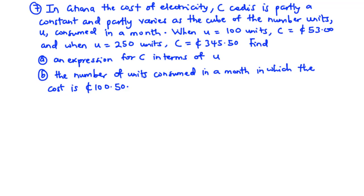Question number 7 is a problem on partial variation. In Ghana, the cost of electricity C in cedis is partly a constant and partly varies as the cube of the number of units U consumed in a month. When U is 100 units, the cost is 53 cedis. When U is 250 units, the cost is 345.50 cedis. We need to find: (A) an expression for C in terms of U, and (B) the number of units consumed in a month when the cost is 100.50 cedis.